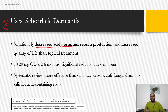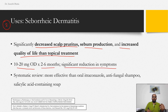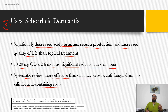The second use is seborrheic dermatitis. Isotretinoin significantly decreases scalp pruritus, sebum production, and improves quality of life compared to topical treatment alone. The dose is 10 to 20 mg/day for two to six months with significant symptom reduction. One systematic review found it more effective than oral itraconazole, antifungal shampoos, or salicylic acid soaps — making it a good option for severe seborrheic dermatitis not responding to itraconazole, ketoconazole, or anti-inflammatory agents.